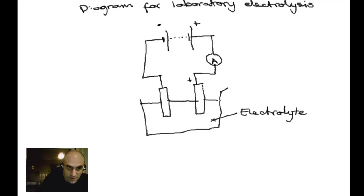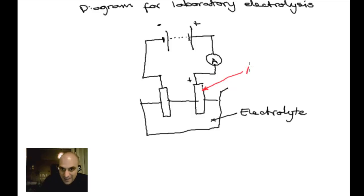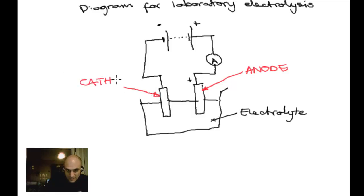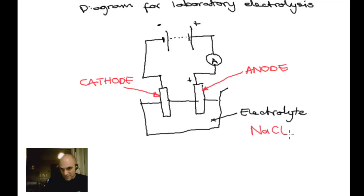The positive electrode is the anode; the negative electrode is known as the cathode. The cathode and anode were named by Faraday. If we're using liquid sodium chloride as our electrolyte, when you melt it, the ions are free to move — they dissociate, meaning they fall apart.